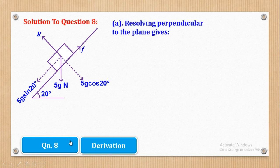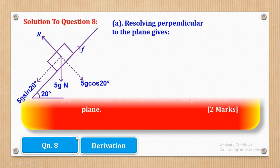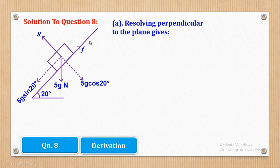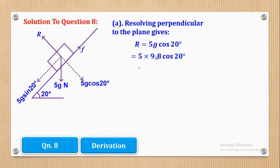For part A, resolving perpendicular to the plane: R = 5g cos 20°. Since g = 9.8, substituting and simplifying gives a normal reaction of 46.0449 N.